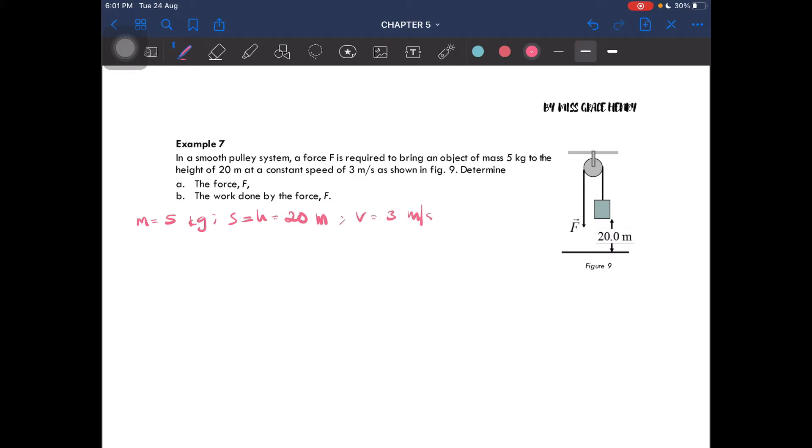Now we have to determine the force as well as the work done by the force. So how do we do that? There's two methods. I'll show you the first one. Since this object is moving at a constant speed, it means that acceleration is equal to zero, hence the net force would be equal to zero.